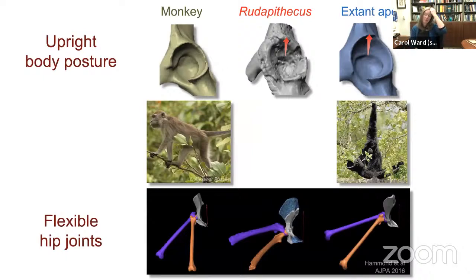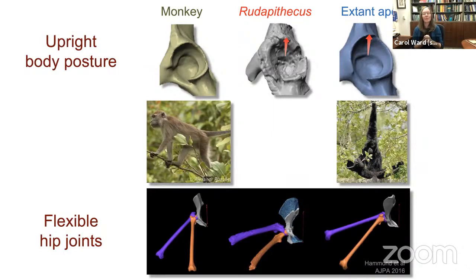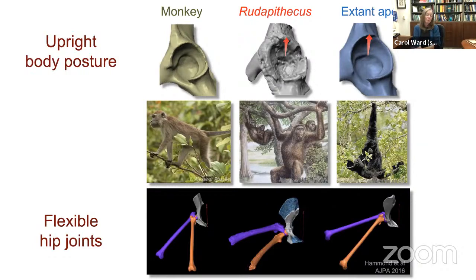Ashley Hammond in 2016 published a paper digitally articulating the femur with the Rudipithecus hip bone and using soft tissue constraints to assess range of motion. She showed that Rudipithecus would have been capable of much greater hip abduction than a typical monkey — much more similar to what we see in a siamang. So Rudipithecus was likely an orthograde acrobatic arboreal climber.